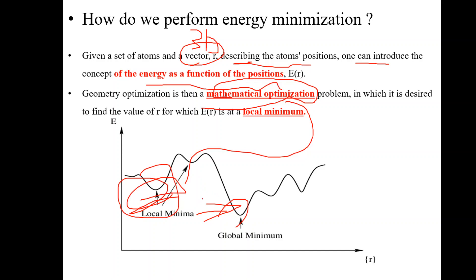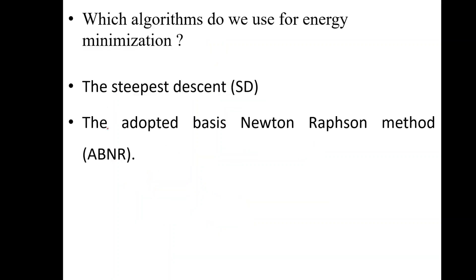We use some kind of algorithms. The simplest or most common is called steepest descent, and a more precise or advanced one is ABNR. Maybe we can have another video in detail explaining how these algorithms work, but I'm not going to extend this video too much.